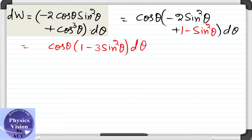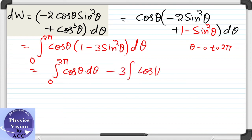For the complete work done we will integrate this factor within the given limits 0 to 2π. Theta is from 0 to 2π. Now it is very easy - in 0 to 2π, cos θ dθ is 0, as well as cos θ sin² θ is also 0. Both of these integrations will give you a 0 result.